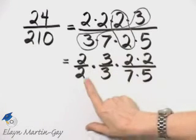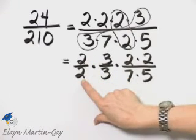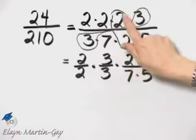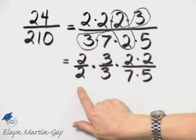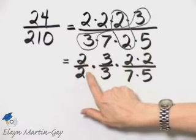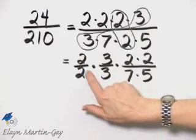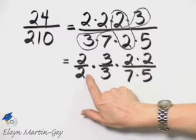Now, why am I writing it this way? Because remember, 2 over 2, which is this common factor in the numerator and denominator, that simplifies to 1. Any number divided by itself, except 0 of course, simplifies to 1.